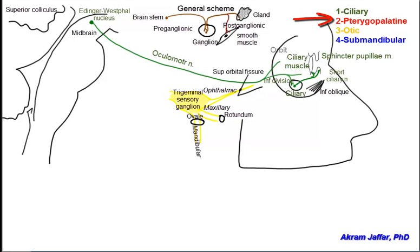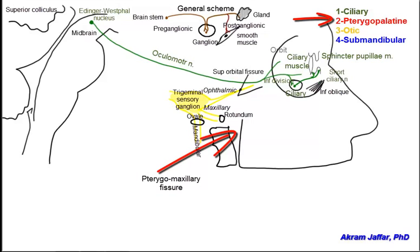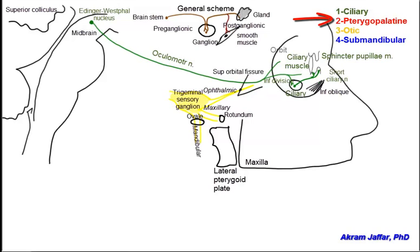The pterygopalatine fossa is a hidden area of the skull that can be seen through the pterygomaxillary fissure, located between the lateral pterygoid plate and the posterior part of the maxilla. The maxillary nerve can access the pterygopalatine fossa through foramen rotundum. Within the fossa, the pterygopalatine ganglion hangs down from the maxillary nerve.